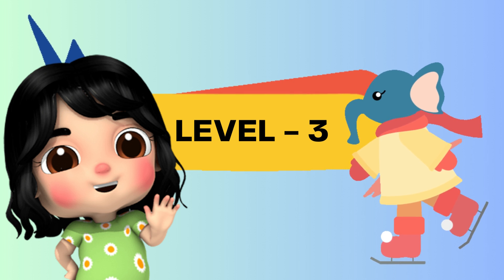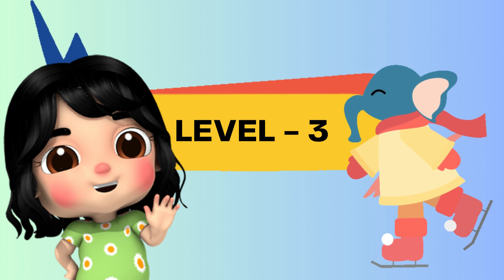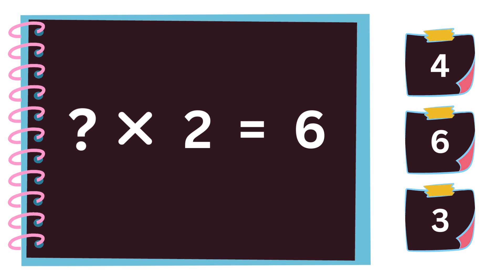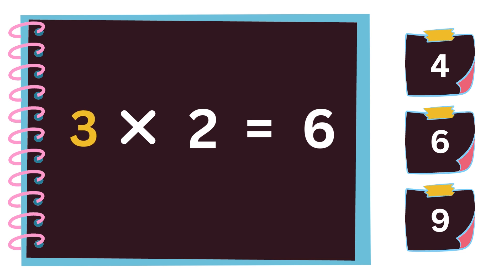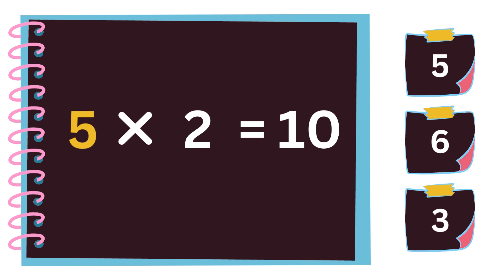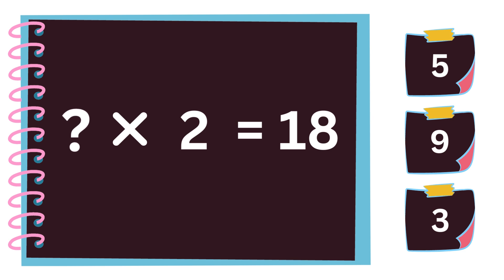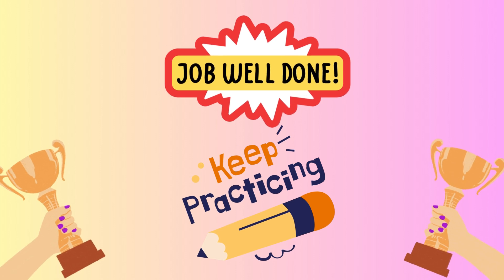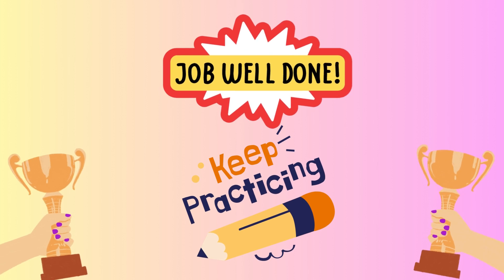Level three. Three twos are six. Five twos are six. Nine twos are eighteen. Thank you.